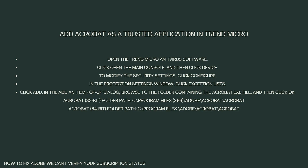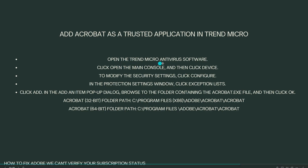If updating Trend Micro doesn't work, add the location of the Acrobat application's executable file in the exception list or trusted application list of Trend Micro Antivirus. To do that, first open the Trend Micro Antivirus software, click 'Open the Main Console,' and then click 'Device' to modify the security settings. Click 'Configure.'